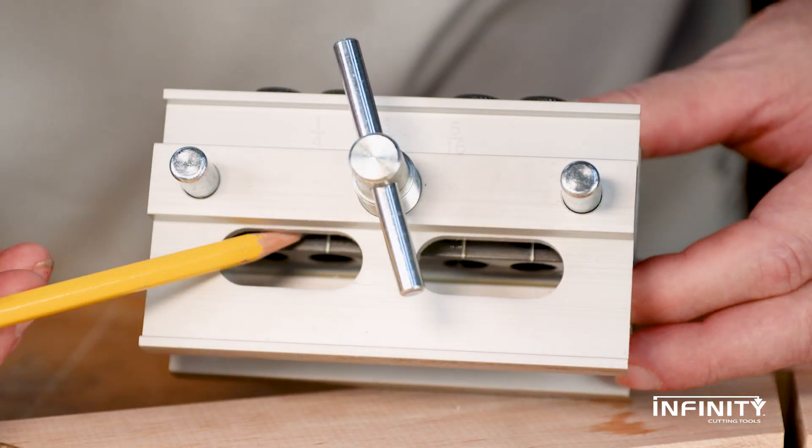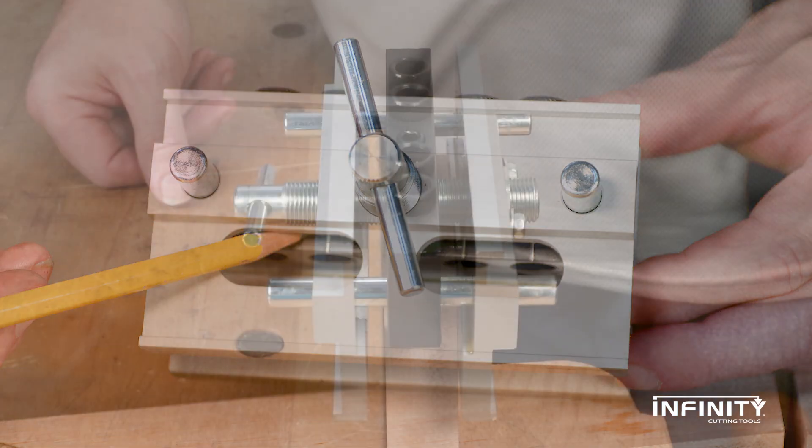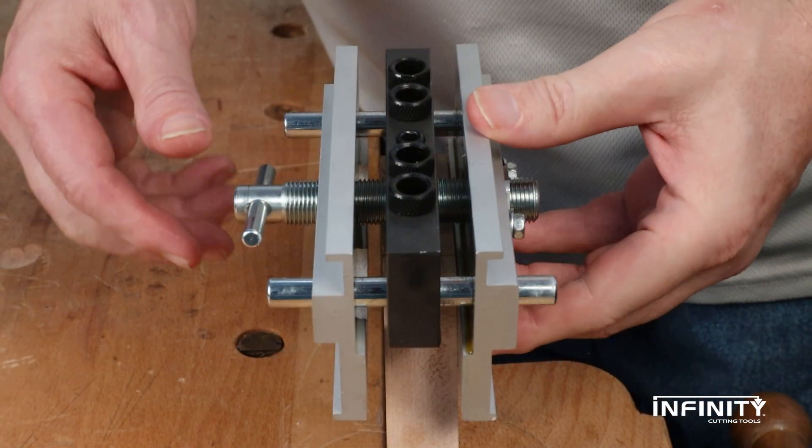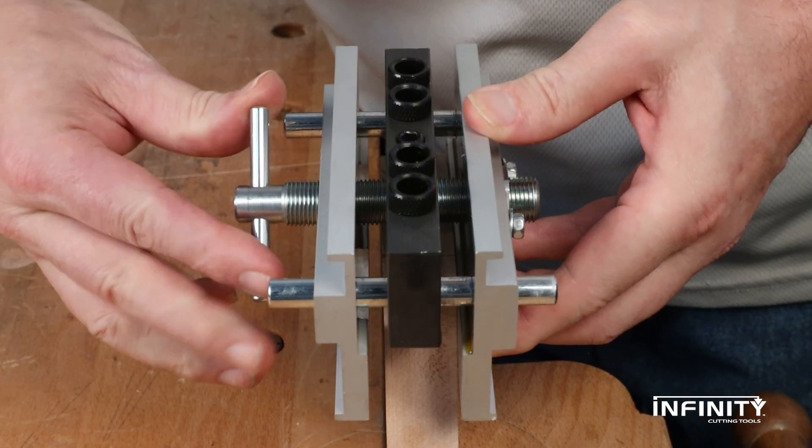Our doweling jig has lines milled into the center block which are visible in the viewing windows. Those lines indicate where the centers of the drill guide holes are. Align those milled marks with your pencil lines and tighten the central screw.